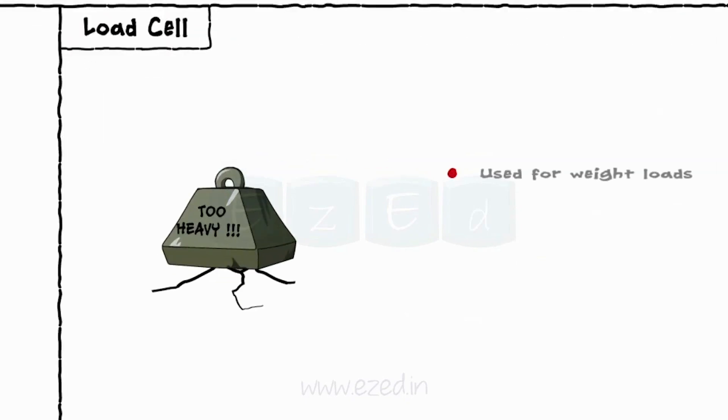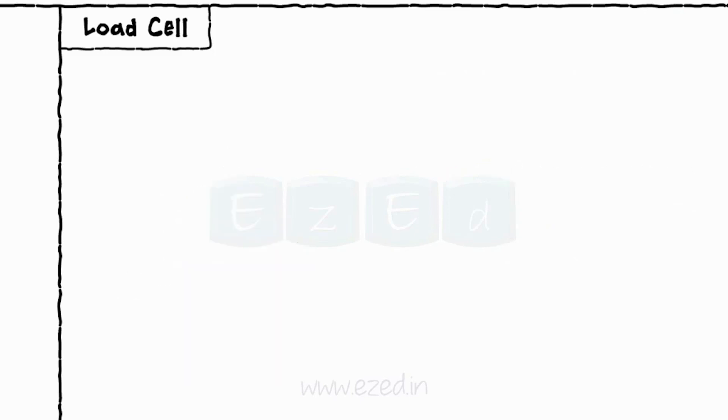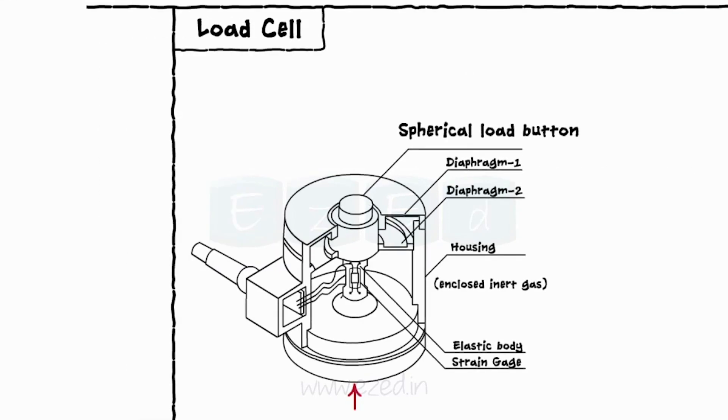The next type of transducer is a load cell transducer. As the name suggests, a load cell is used for weighing extremely heavy loads. Load cells use strain gauges for measuring the weights.